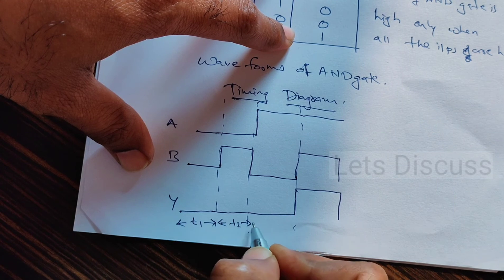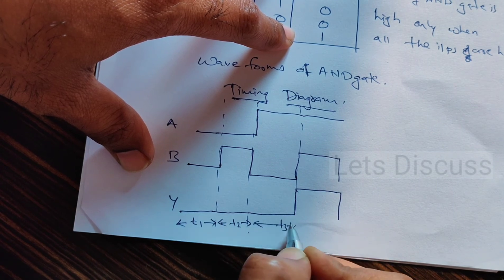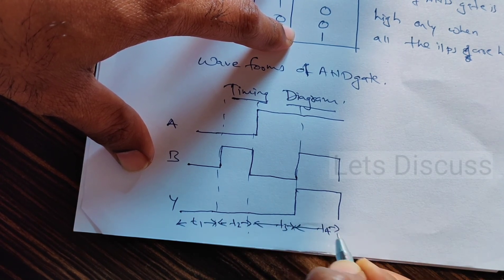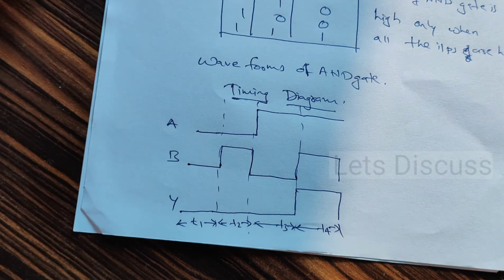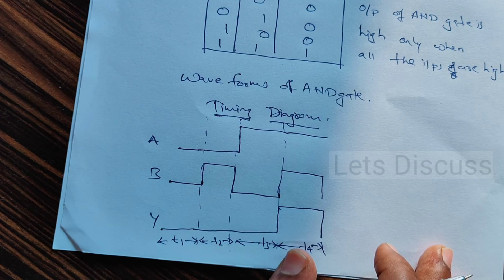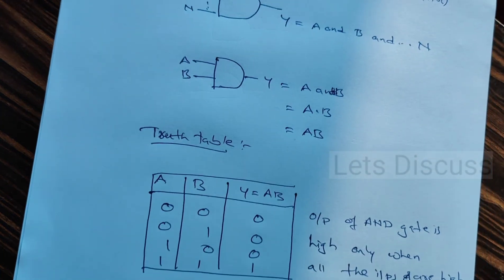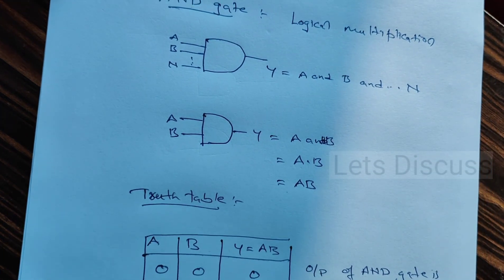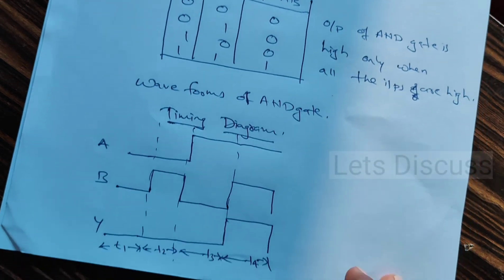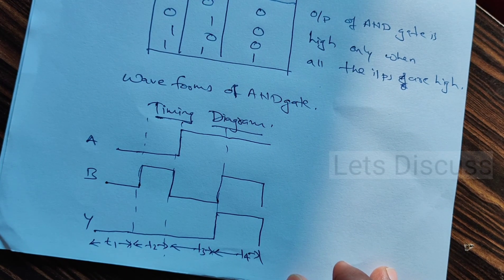This is t1, this is t2, this is t3, this is t4. This is all about the AND gate. Check the next video for the remaining gates. Thank you for watching.